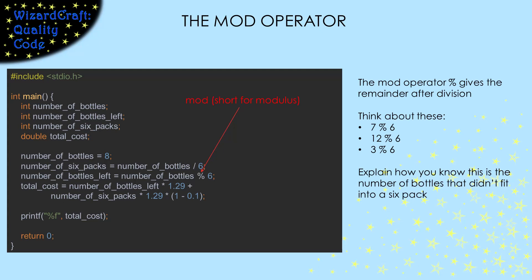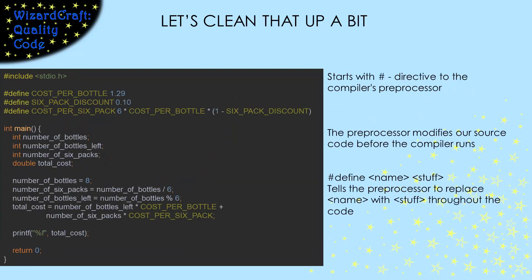Now that code was pretty hard to read and has a bunch of hard-coded constants. In C, the way to give those constants names is with pound-define statements. Like the pound-include, these are instructions to a part of the compiler called the preprocessor. The preprocessor modifies our source code before the compiler runs. Pound-defines are always of the form pound-define, name, stuff.